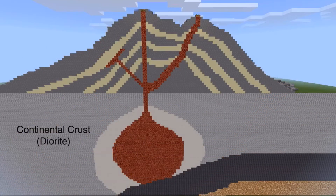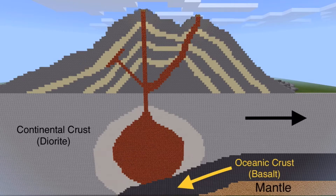Now we'll go through all the different features that you can see here. First, the continental crust is represented here by diorite. Most of the continental crust is made up of rocks like diorite and granite, so Minecraft can model that pretty accurately. Next, you can see the mantle, represented by glowstone here. The mantle is the layer of the earth underneath the crust. You can also see the oceanic crust, and it is made of basalt, both in Minecraft and in real life.